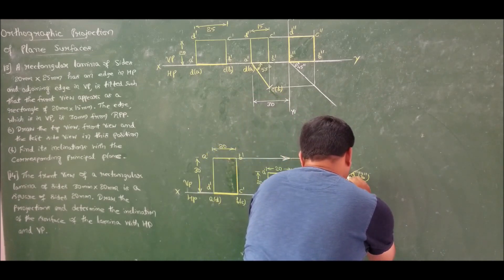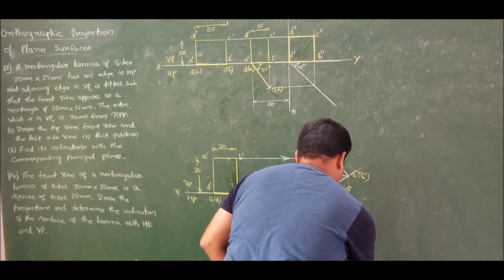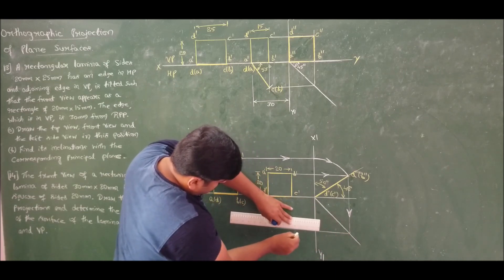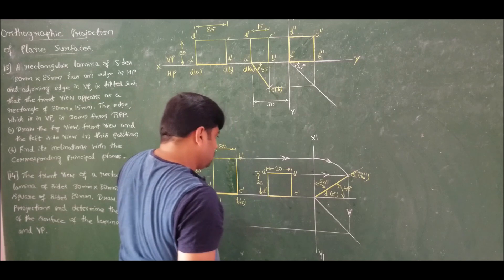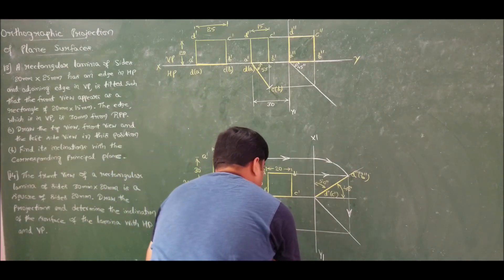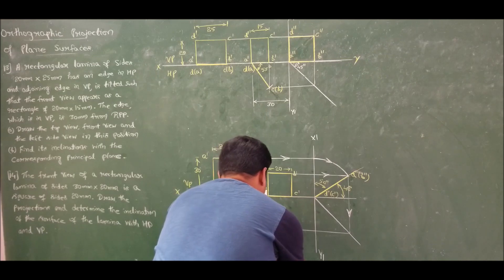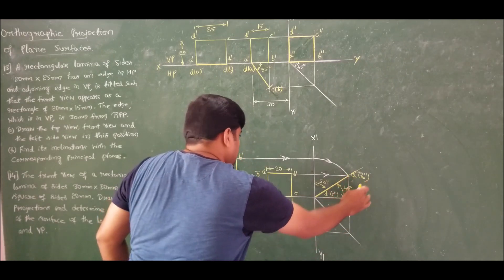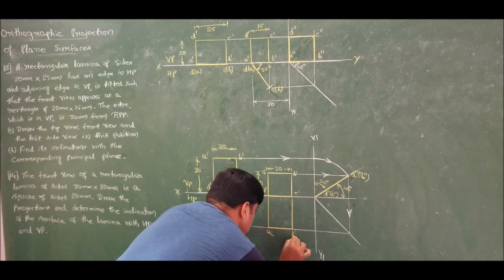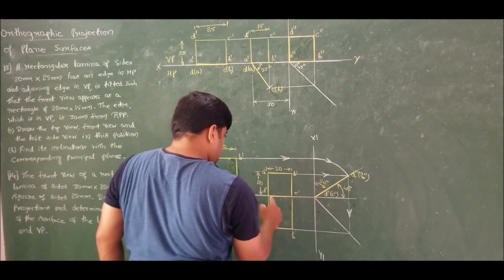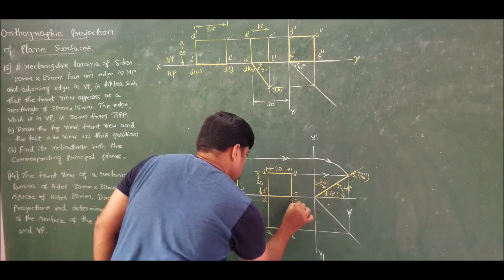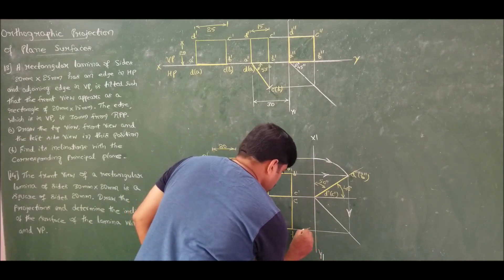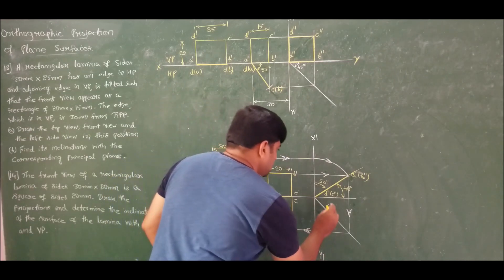Take the projection and bring back the projection. If I take the projection I will get A and B here, and D and C here. This angle is 45 degrees.